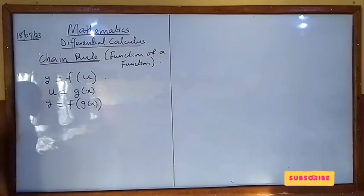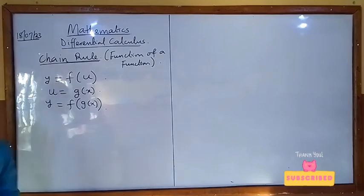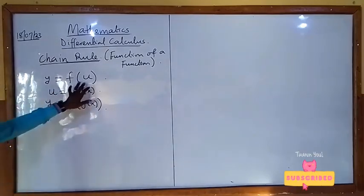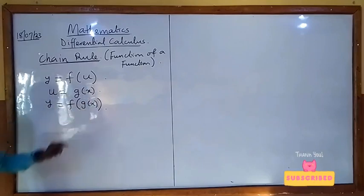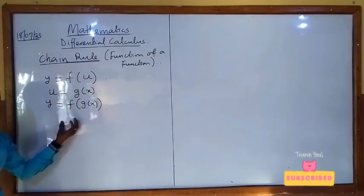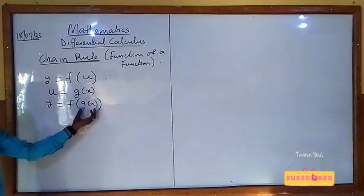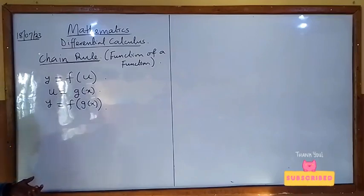This is called function of a function. y is a function of u and u is a function of x, so y is a function of a function of x. Then the chain rule is applicable here.